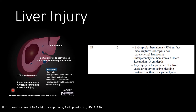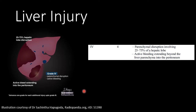You cannot advance the grade beyond grade three based on multiple injuries alone. Grade four lacerations represent very severe injuries where there is actual disruption of the hepatic parenchyma — parenchymal disruption up to 75 percent of the liver is a grade four injury. Additionally, if there is active bleeding into the peritoneal cavity, unlike grade three where bleeding is contained within the liver, you now have active bleeding extending into the peritoneal cavity causing hemoperitoneum.